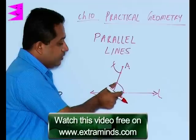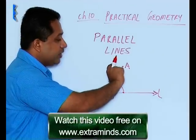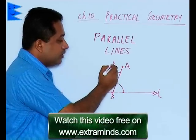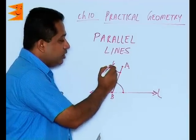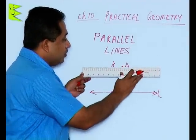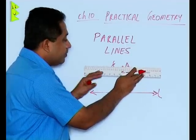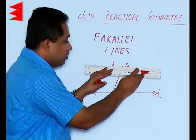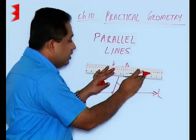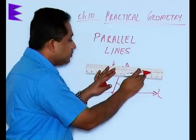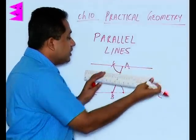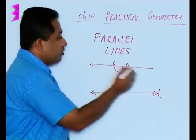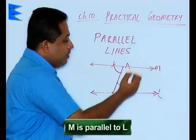So whatever arc is here, the same arc length we have taken here. You get a point here that is the point of intersection, and then we are going to join these two points and extend it. We will keep the scale here and join these two points. Now the line that you are going to get, M, will be parallel to L.